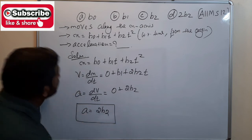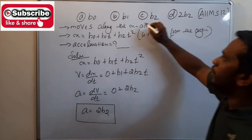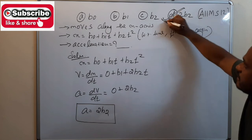The options are b0, b1, b2, and d which is 2 b2. So this is the correct answer.